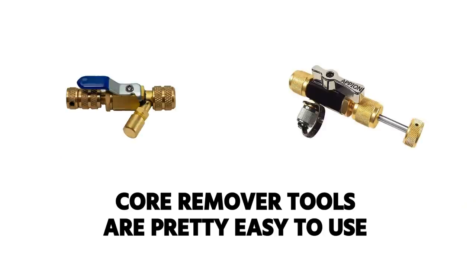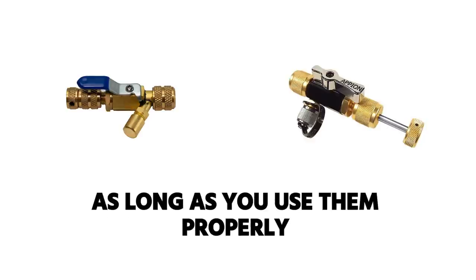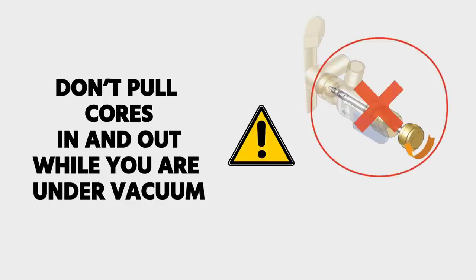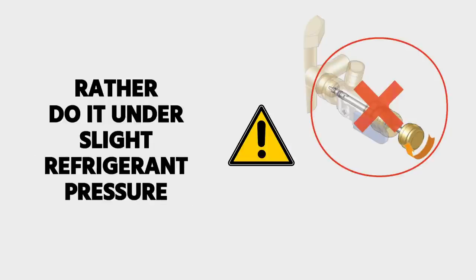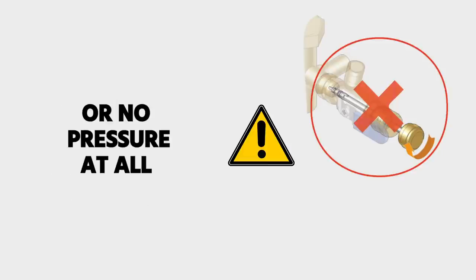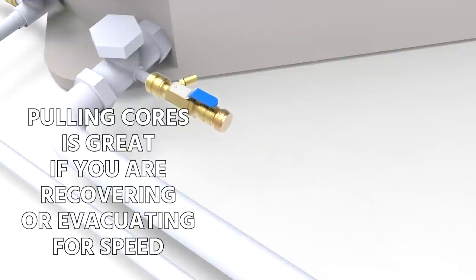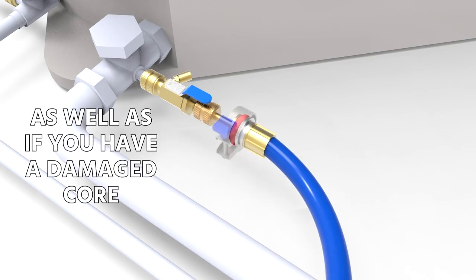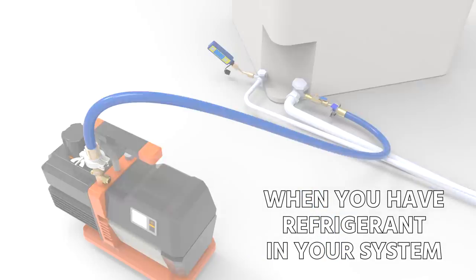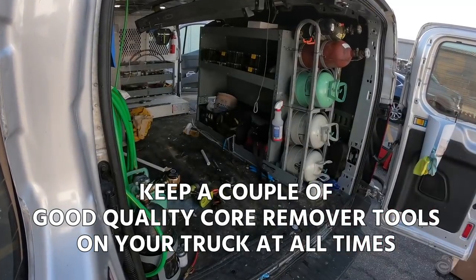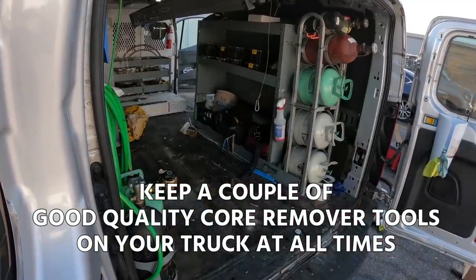So that's it. Core remover tools are pretty easy to use, so long as you use them properly and make sure not to try to pull cores in and out when you are under vacuum, but rather do it under slight refrigerant pressure or no pressure at all if the system has completely been recovered. Pulling cores is great if you are recovering or evacuating the system for speed, as well as if you have a damaged core when you have refrigerant in the system. So definitely keep a couple good quality core remover tools on your truck at all times.